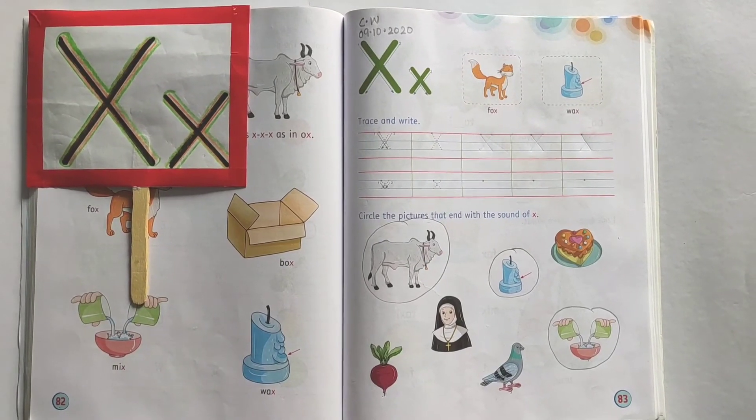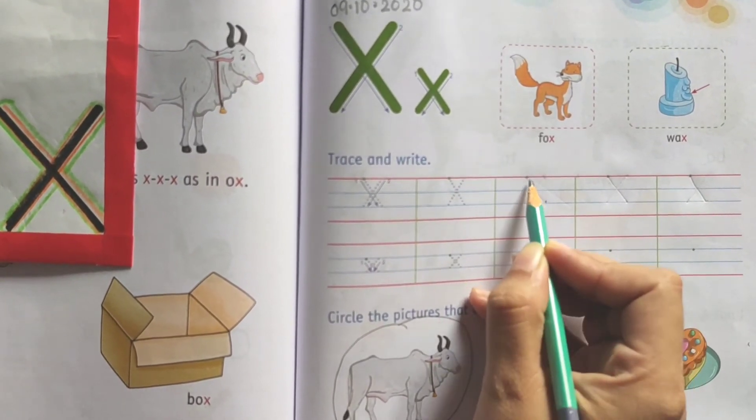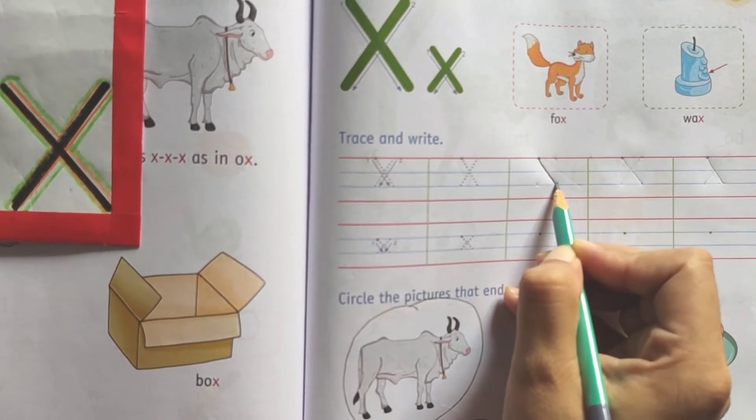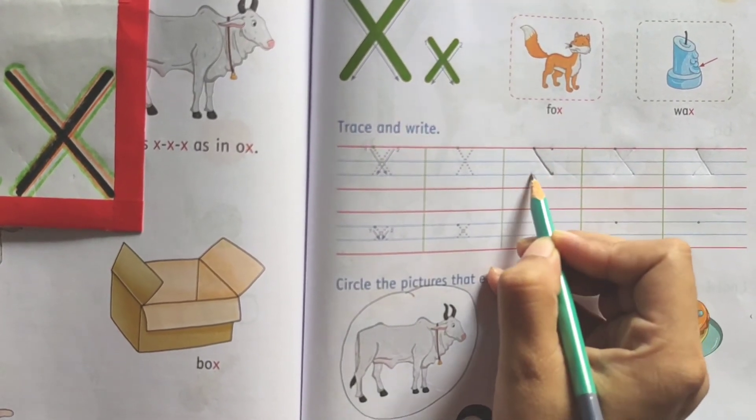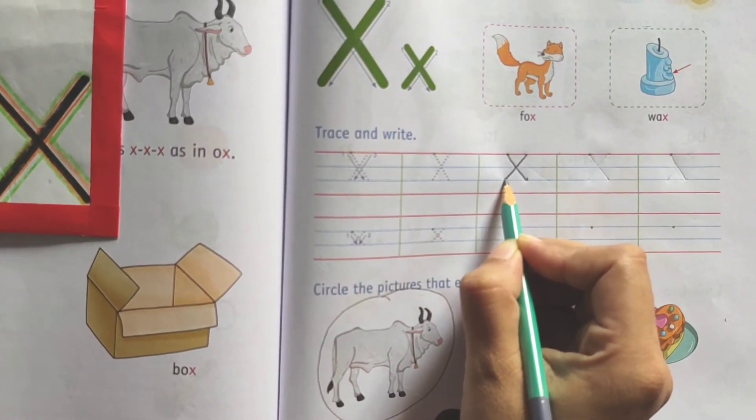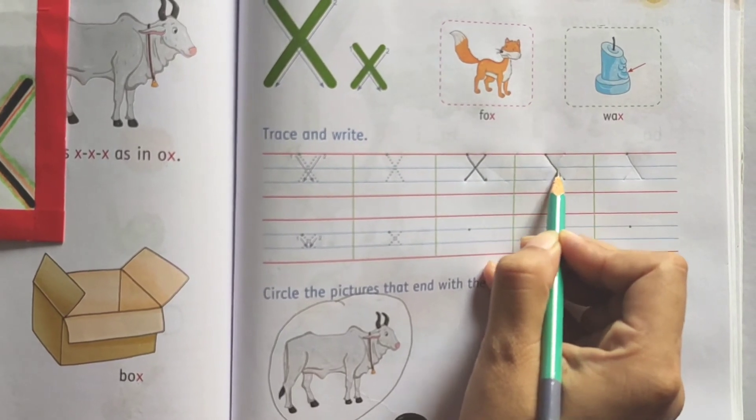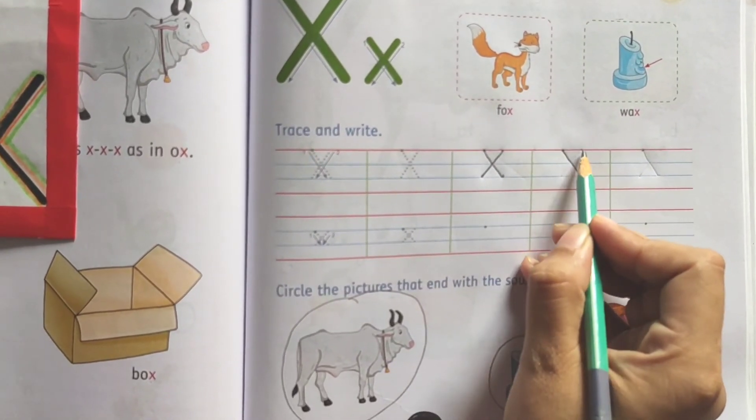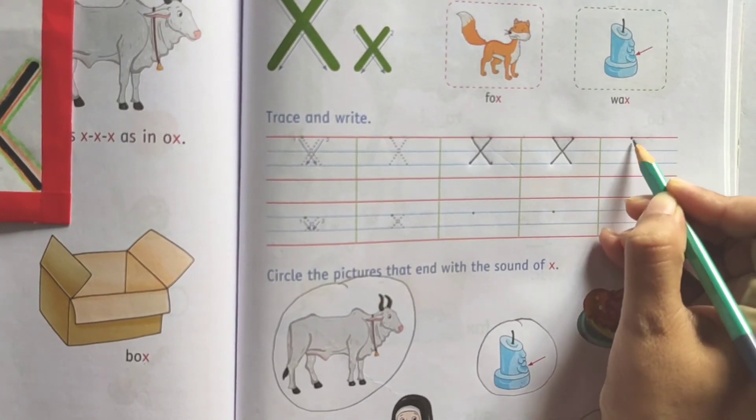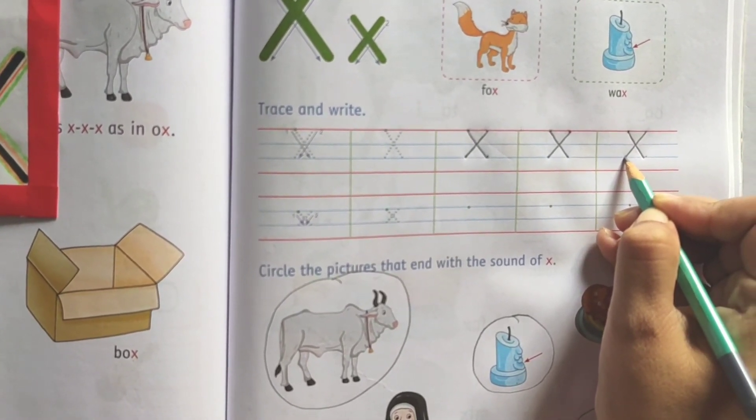Let's learn how to write letter X. First, you have to make left slanting line from first red line to second blue line. Then, make right slanting line from first red line to second blue line. Makes capital letter X. One more time. First, make left slanting line from first red line to second blue line. Then, right slanting line. Makes capital letter X.